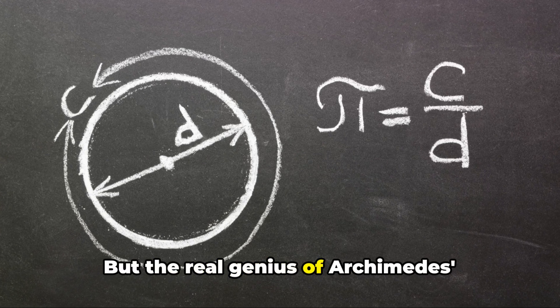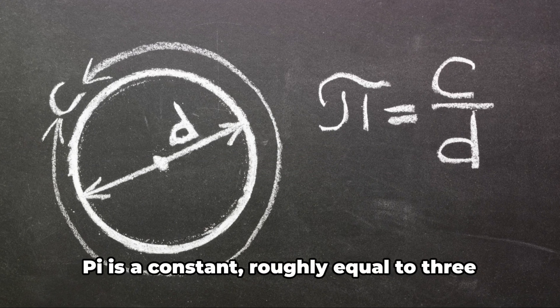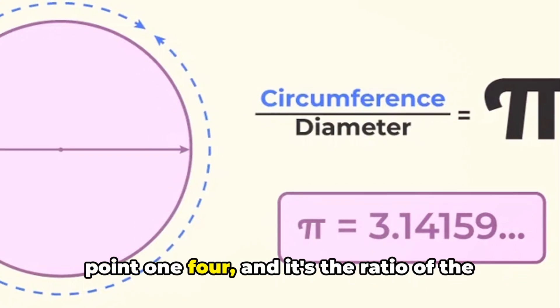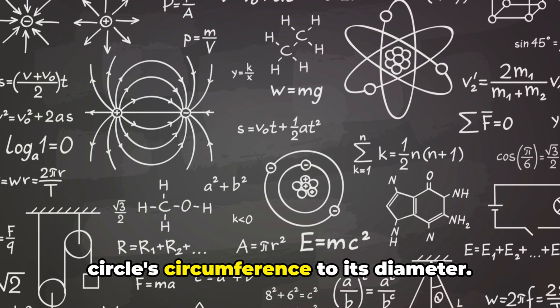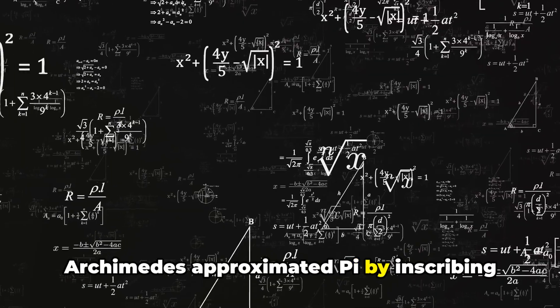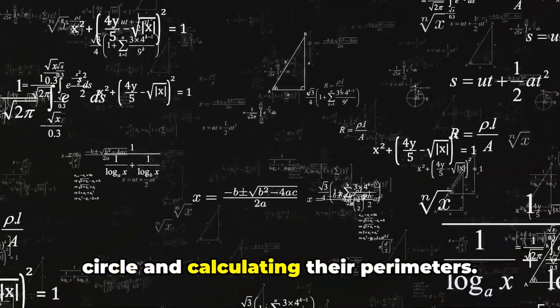But the real genius of Archimedes' theorem lies in his approximation of pi. Pi is a constant, roughly equal to 3.14, and it's the ratio of the circle's circumference to its diameter. Archimedes approximated pi by inscribing and circumscribing polygons around the circle and calculating their perimeters.